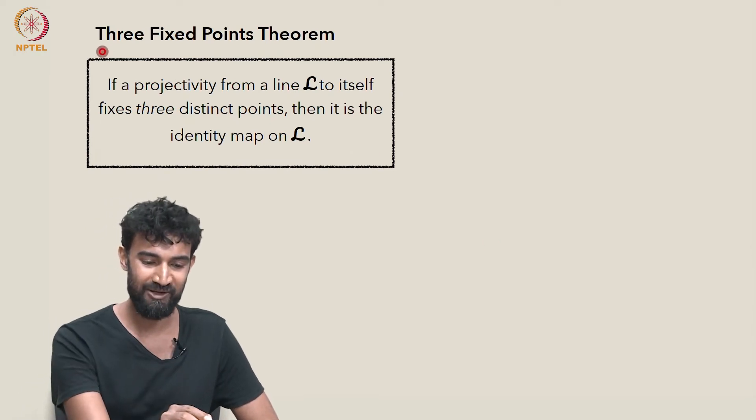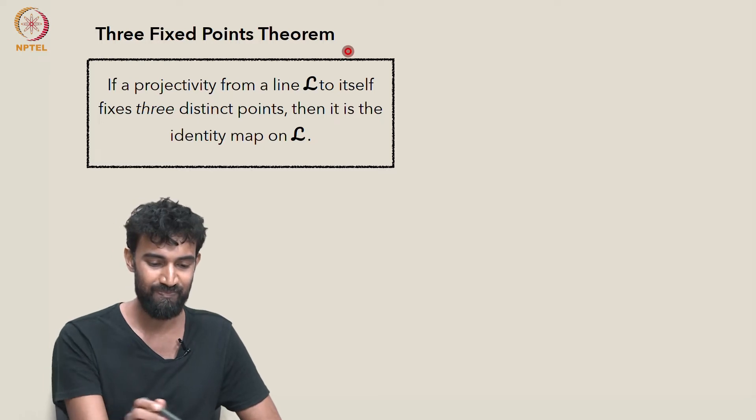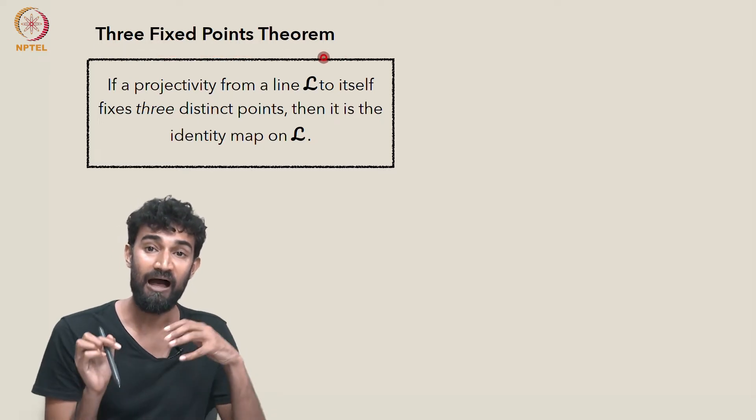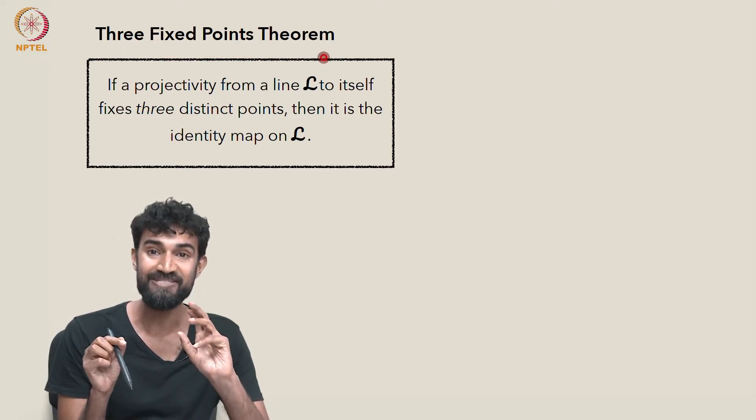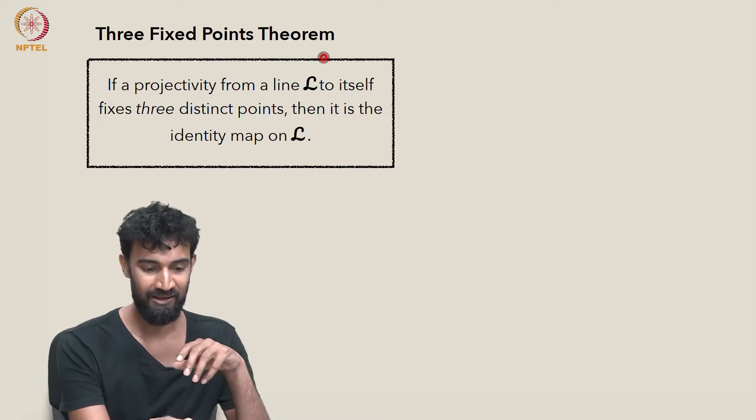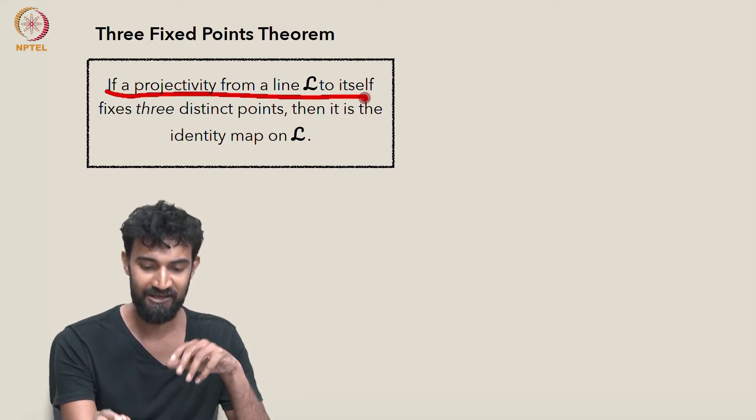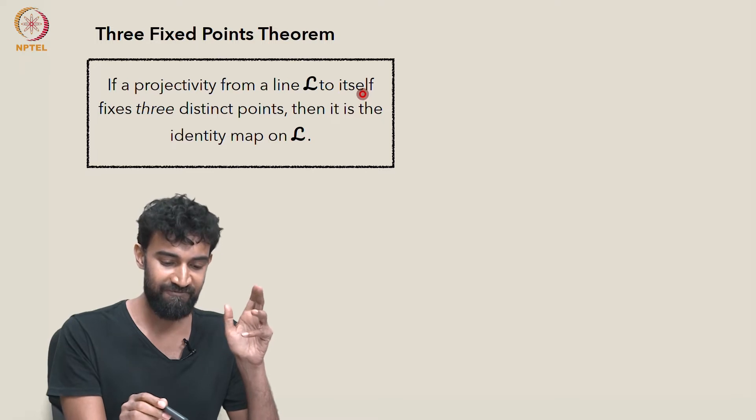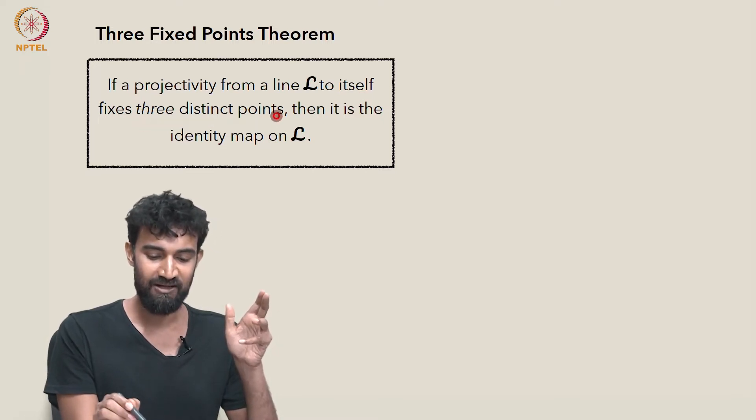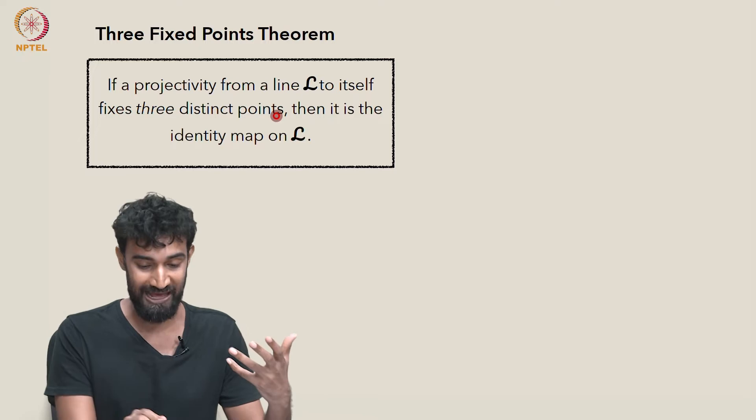According to a theorem that we're going to introduce now, the Three Fixed Points Theorem, a projectivity with three fixed points has a very specific form. Namely, if a projectivity from L to itself fixes three distinct points, then it's actually the identity map on L.